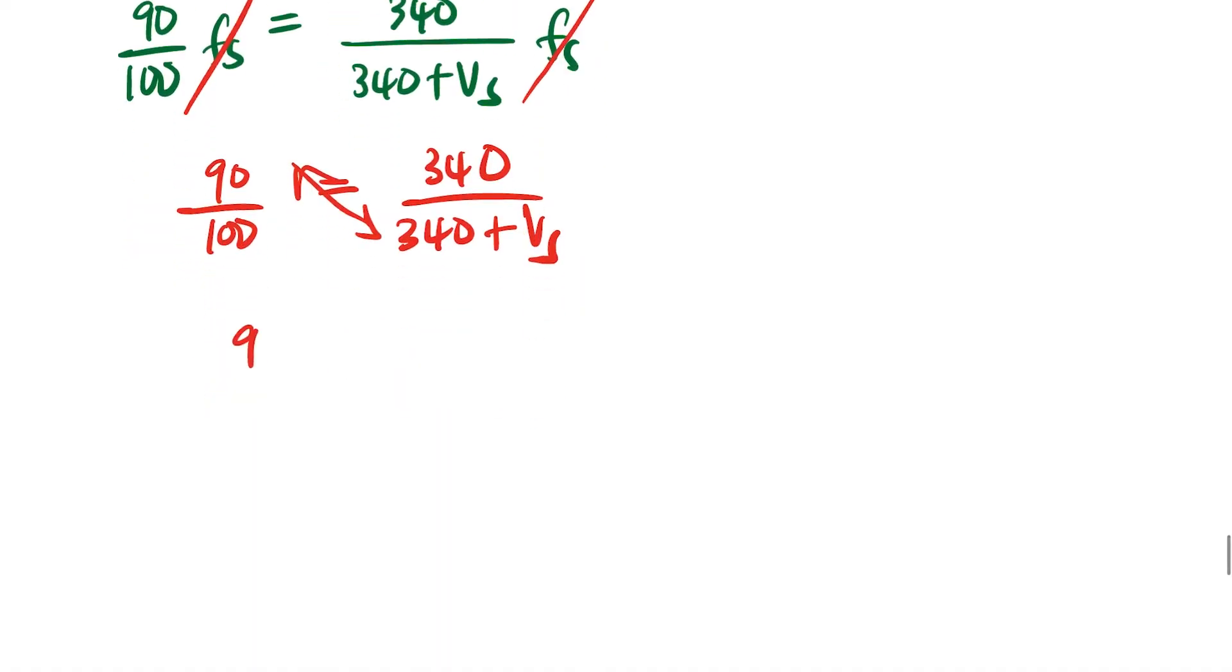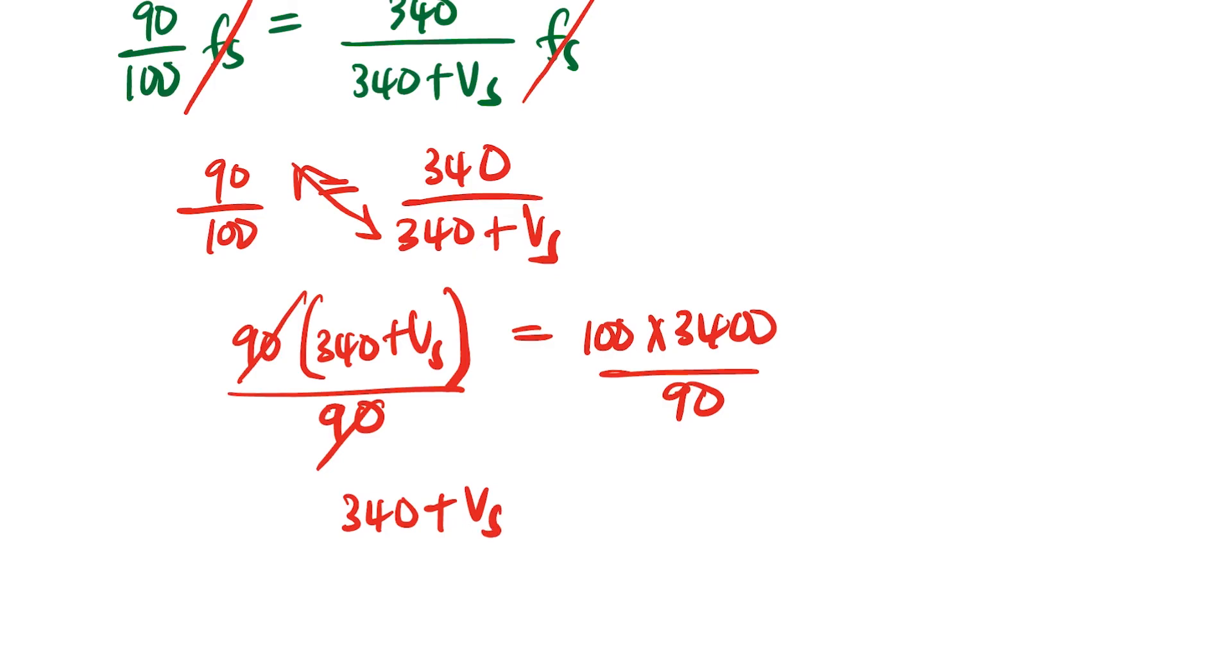So, cross-multiply there. So, you're going to have 90 times 340 plus VS equal to 100 times by 340. And then, since our unknown is in this side, so we'll divide by 90. So, we'll divide by 90 both sides. So, we'll have 340 plus VS equal to, and then, it's going to be 100. So, that is going to be 3,400 times by 100. It's going to be 3,400. 340 times by 100, it's 34,000. It's 34,000 divided by 90.